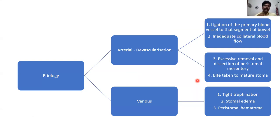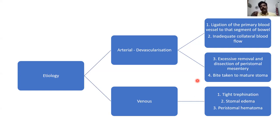Other reasons include skeletonization of the bowel — sometimes we skeletonize the colon more than the recommended 0.5 cm, increasing the chances of ischemia. Also, when taking bites to mature the stoma to the fascia and skin, we might inadvertently incorporate some part of the mesentery, which can also lead to arterial ischemia. Venous ischemia is similar to what was discussed in stoma edema — peristomal edema or stoma edema per se can also cause some amount of vascular insufficiency.